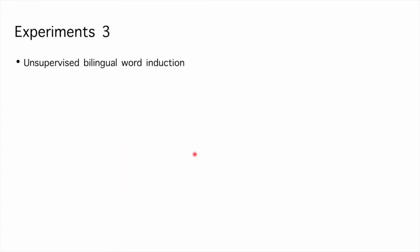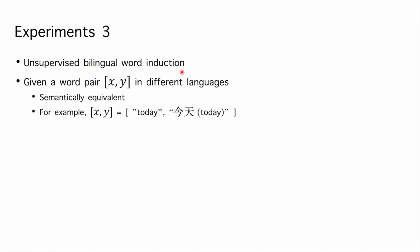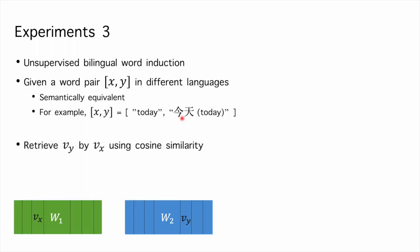To analyze whether words with equivalent semantics in different languages are mapped together with the proposed approaches, we conduct experiments on unsupervised bilingual word induction. Given the semantic aligned word pair in different languages, such as today in English and Jintian in Mandarin, we use their word representations to retrieve each other.